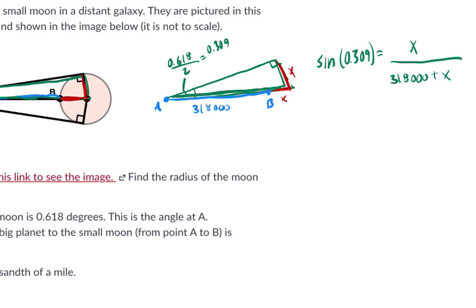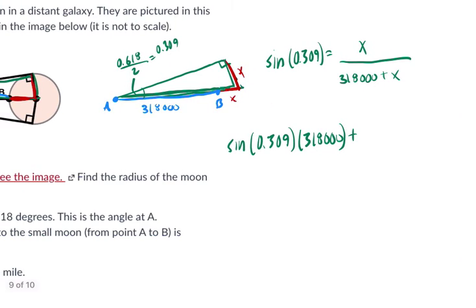Well, there's not much we can do at this point. But let's isolate x. So let's multiply our denominator by this sine value right here. So we get the sine of 0.309 times 318,000 plus the sine of 0.309 times x equals x. And we're really getting somewhere, actually. The next typical step will be to subtract this term on both sides.